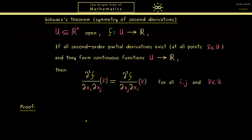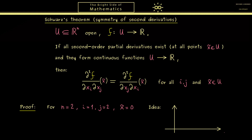If you don't know the mean value theorem you can check it out in my real analysis course, part 41. For the proof I suggest we keep it simple and consider the case n = 2, and consequently assume i = 1 and j = 2. If we understand this case we can do the general case as well. My last simplification is to consider the point x-tilde as the origin — this does not change anything, it just keeps our notation more compact. The general idea is to apply the mean value theorem in two directions: the x_1 direction and the x_2 direction.